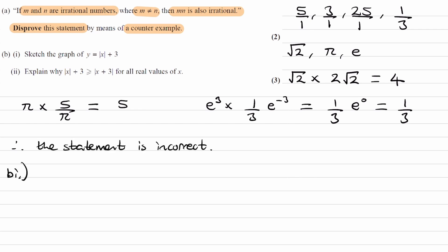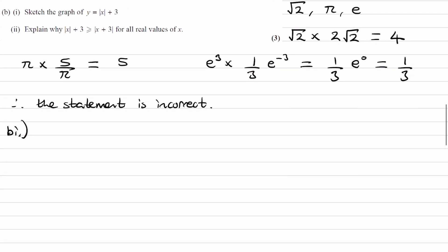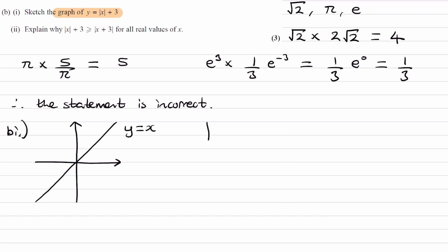On to part B: sketch the graph of y equals modulus of x plus 3. Let's start by doing a quick sketch of y equals x — that's straightforward. For modulus functions, with whatever line you have, anything that dips below the x-axis you reflect above it. So y equals modulus of x looks like a V-shape: the part of y equals x that dipped below the x-axis is reflected above it.